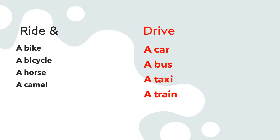And what is the appropriate use of 'drive'? So let's see how we can use 'ride' appropriately. We can use 'ride' with a bike, a bicycle, a horse, or a camel. You can ride these means of transport because they have a space on them. And when we come to the car, bus, taxi, or train, we use 'drive'.